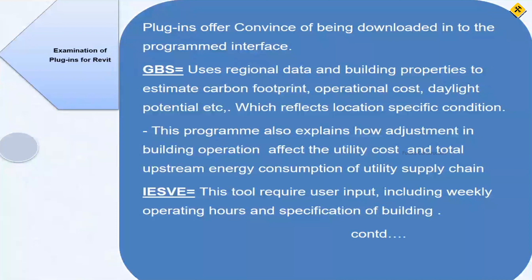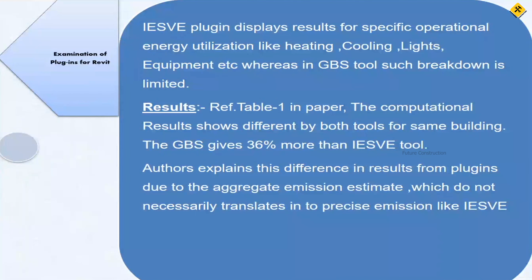GBS also explains how adjustments in building operation affect utility costs and total upstream energy consumption. IESVE, by contrast, requires detailed user input including weekly operating hours and building specifications. A key difference: GBS has built-in coefficients for utility services by region, whereas IESVE requires the user to manually input everything — electricity, diesel, operability. IESVE displays results for specific operational energy categories like heating, cooling, lighting, and equipment, while GBS offers limited breakdown in this regard.